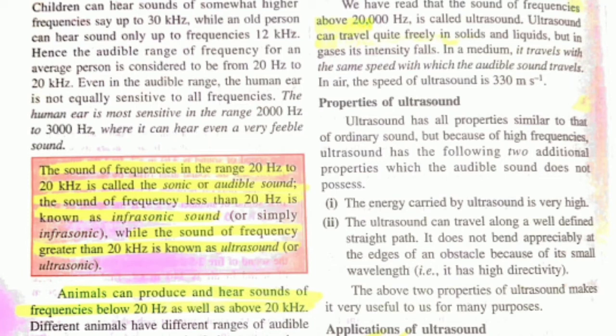Ultrasound is sound above 20,000 hertz or 20 kilohertz. Properties of ultrasound: first, the energy carried by ultrasound is very high. Second, it travels along well-defined straight paths. These two properties are very important. Applications of ultrasound: it is widely used in human organ imaging, and it is used in surgery to remove cataracts. Properties, applications, and the range of frequencies are all important in Exercise B.